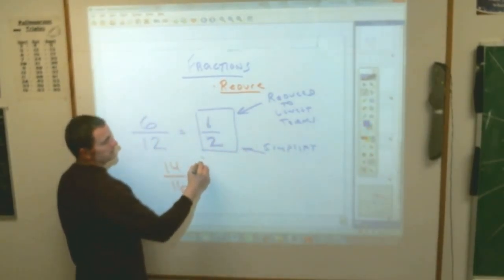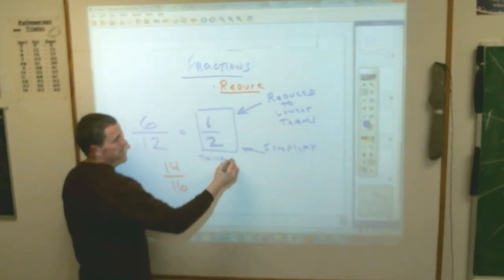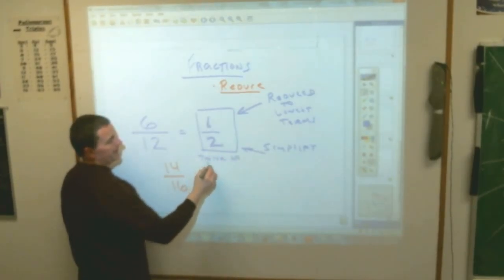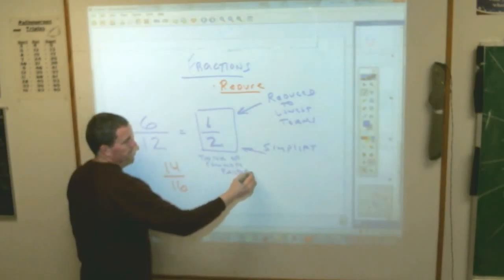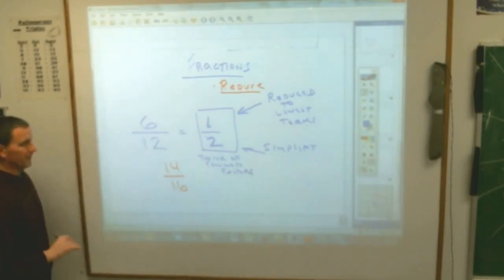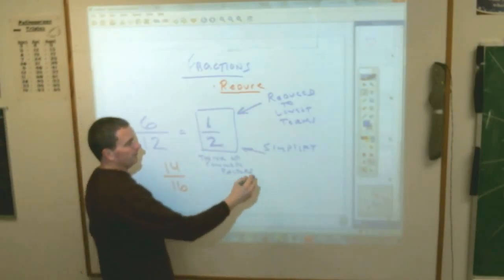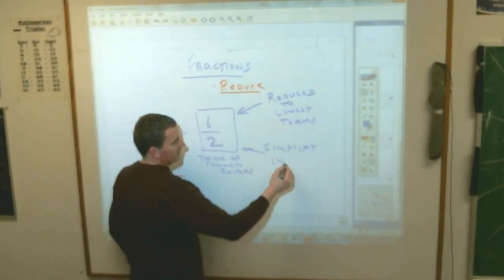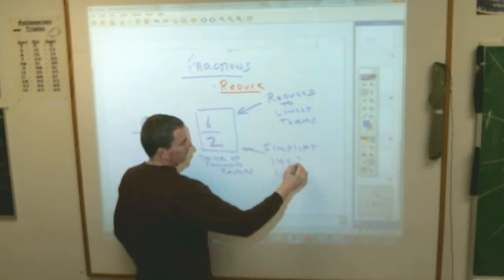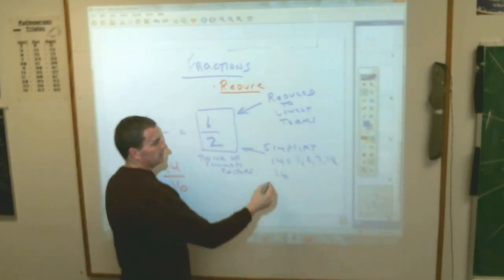You need to think of common factors. And I'll write it out like the long way. You don't have to do this for all the problems, but this is what you think about. If you think about 14, and you think about 16, and you think about what factors they have. 14 has 1, 2, 7, and 14 as factors. Those are numbers that go into 14.